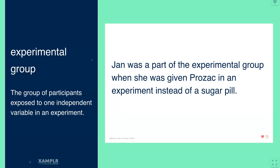For example, Jan was a part of the experimental group when she was given Prozac in an experiment instead of a sugar pill. The other group, the control group, would have gotten the sugar pill, and then they would have measured some sort of difference between the two groups.